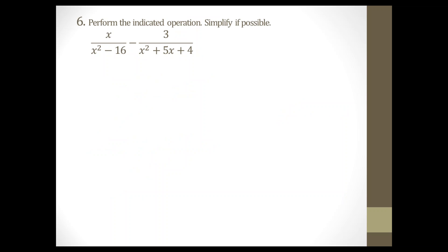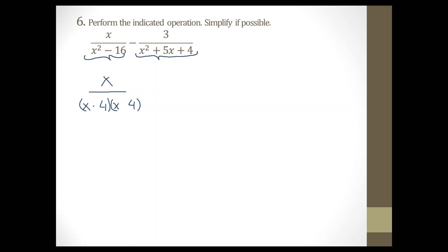Question number 6: perform the indicated operation and simplify if possible. We are still adding and subtracting rational expressions, but now we do not have the same common denominator. To find the least common denominator, we have to simplify these denominators using factoring. Factoring x² minus 16: two terms, both perfect squares — difference of two perfect squares. Split x into x and x, take square root of 16 which is 4 and 4, and use opposite signs.